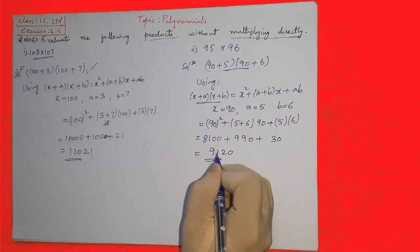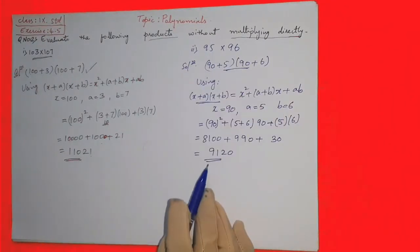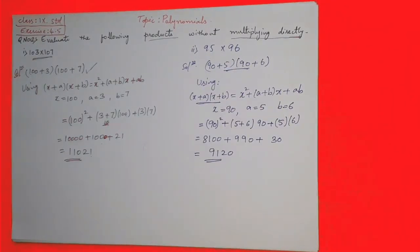Which is equal to 9120. How can you verify it? Multiply 95 and 96, you will get 9120.